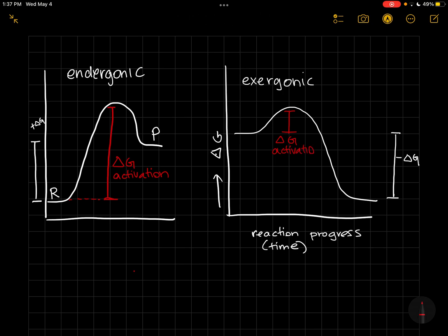And this is the part that an enzyme can lower. So an enzyme or any other catalyst can lower this number, the delta G of activation.